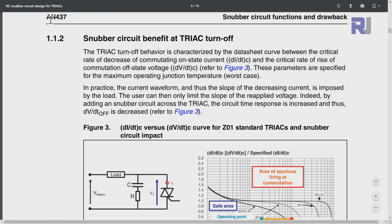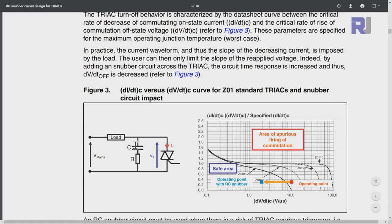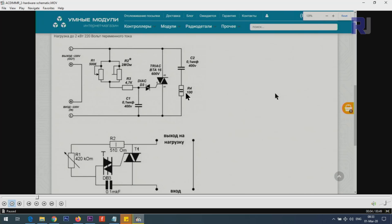And here it explains that the triac under the RC snubber circuit here, exactly 100 ohm resistor with 0.1 microfarad 400 volts capacitor. And if I show you that, this resistor is 100 ohm.